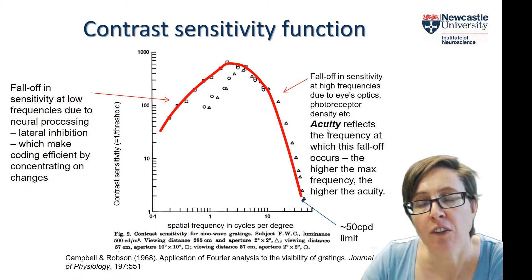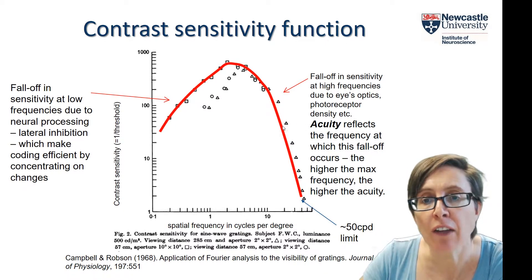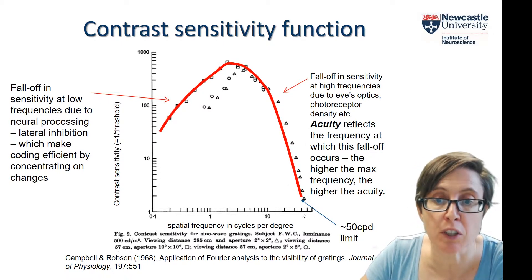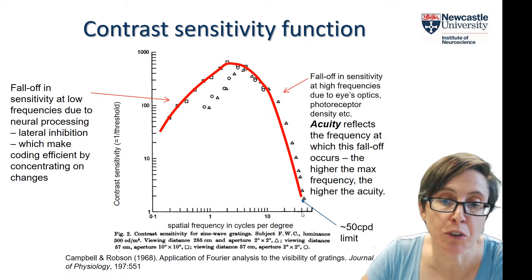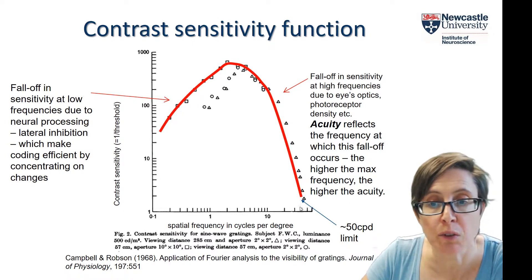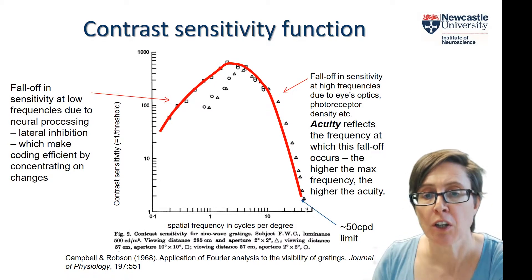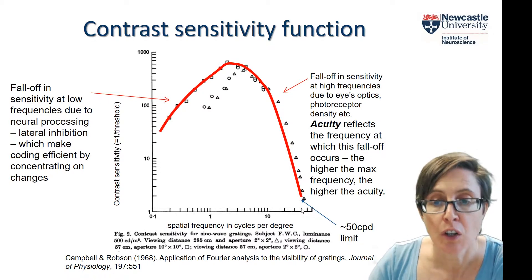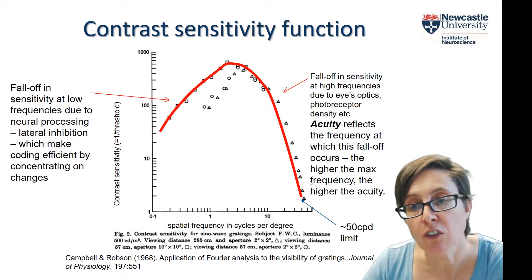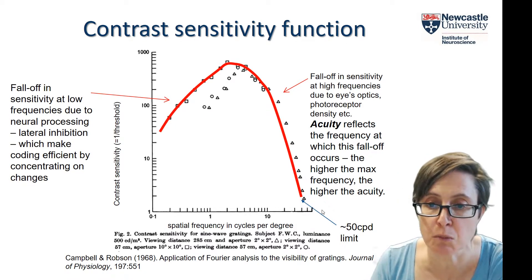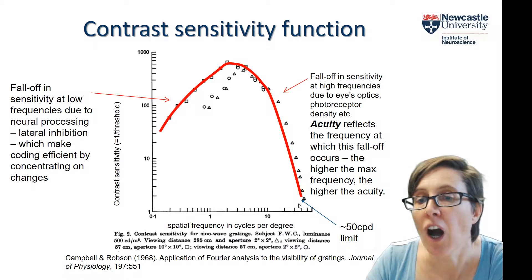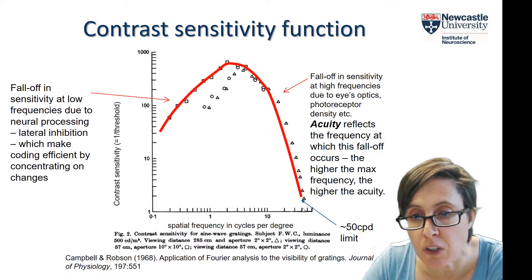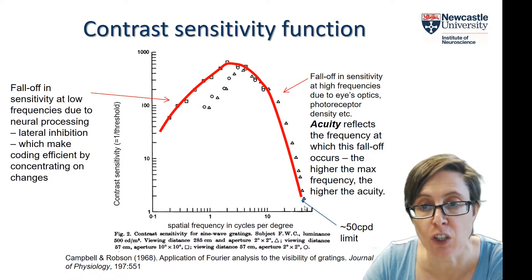Acuity is a word used to describe the sharpness of our vision. In terms of the contrast sensitivity function, it reflects the spatial frequency at which our sensitivity falls to its minimum possible value. A sensitivity of 1 means 100% contrast is needed to see gratings of that detail — you can't go beyond 100% contrast, so for even higher frequencies we simply can't see them. The acuity is the highest spatial frequency we can see, and reading off this graph it's around 40 or 50 cycles per degree.